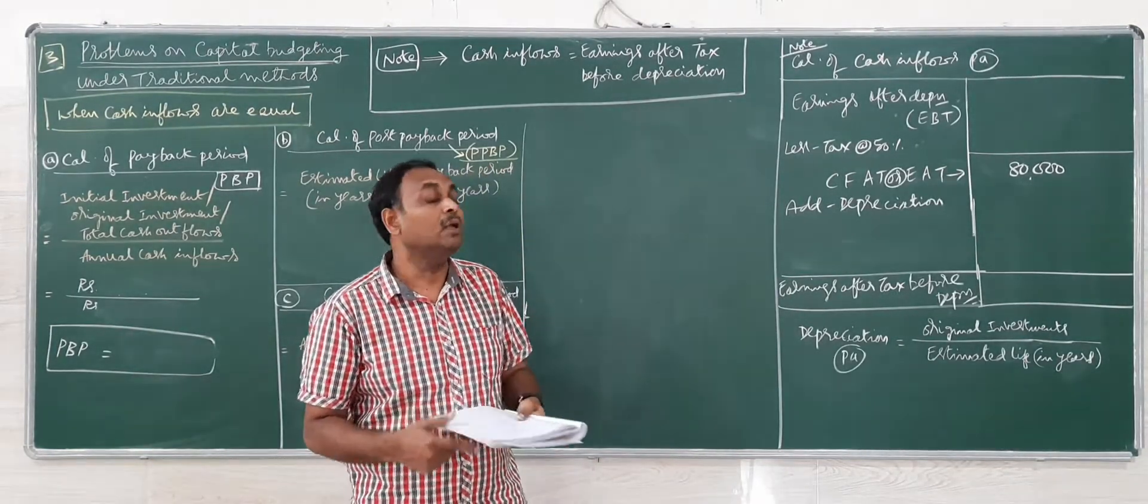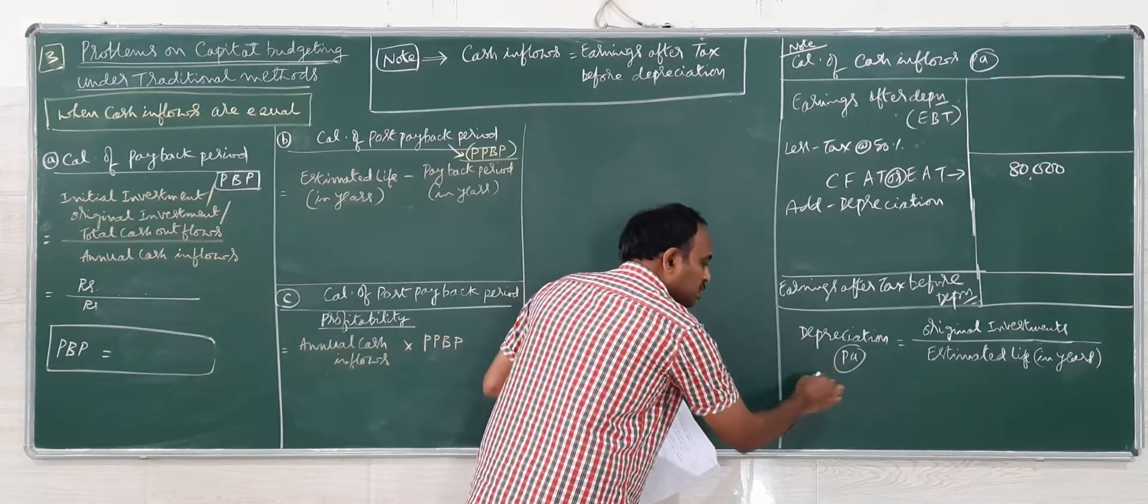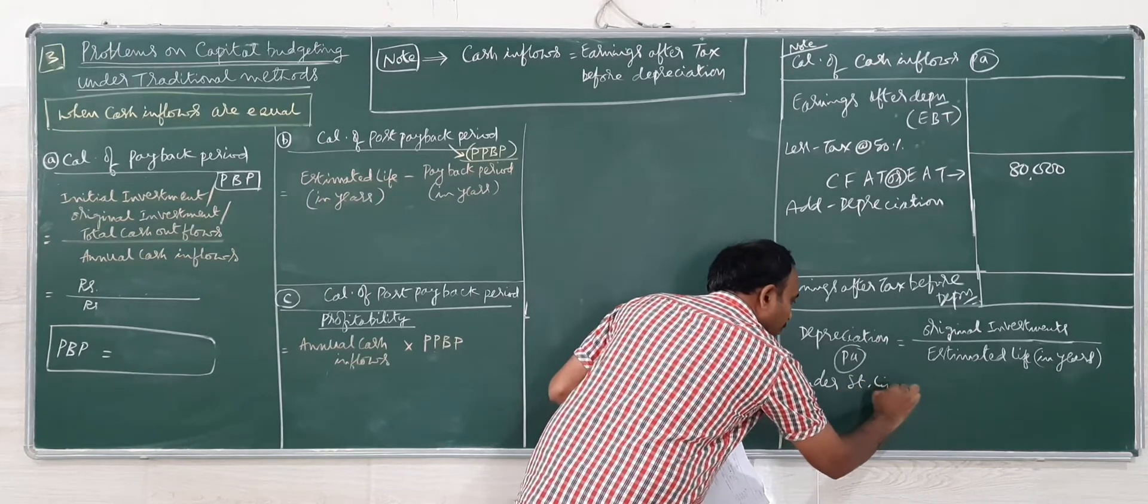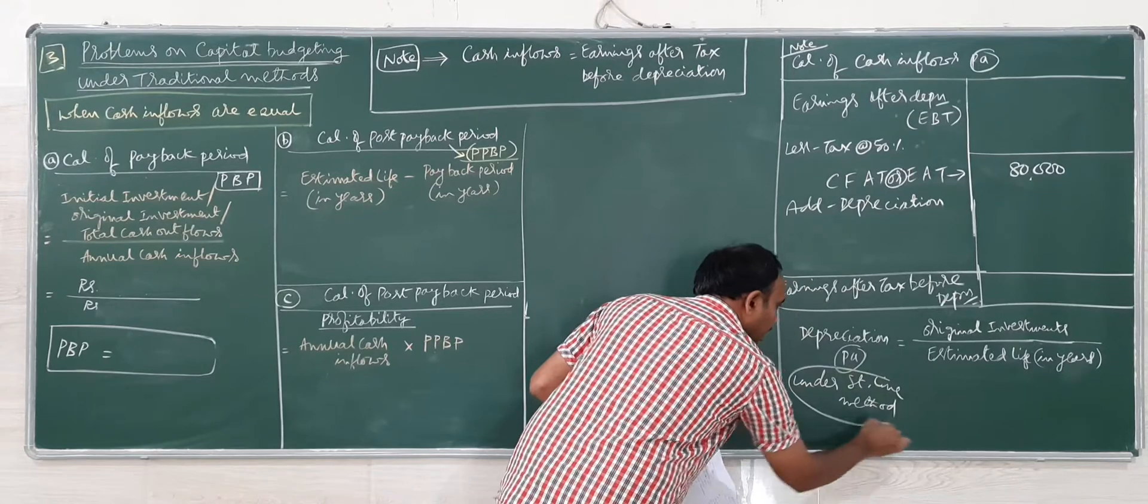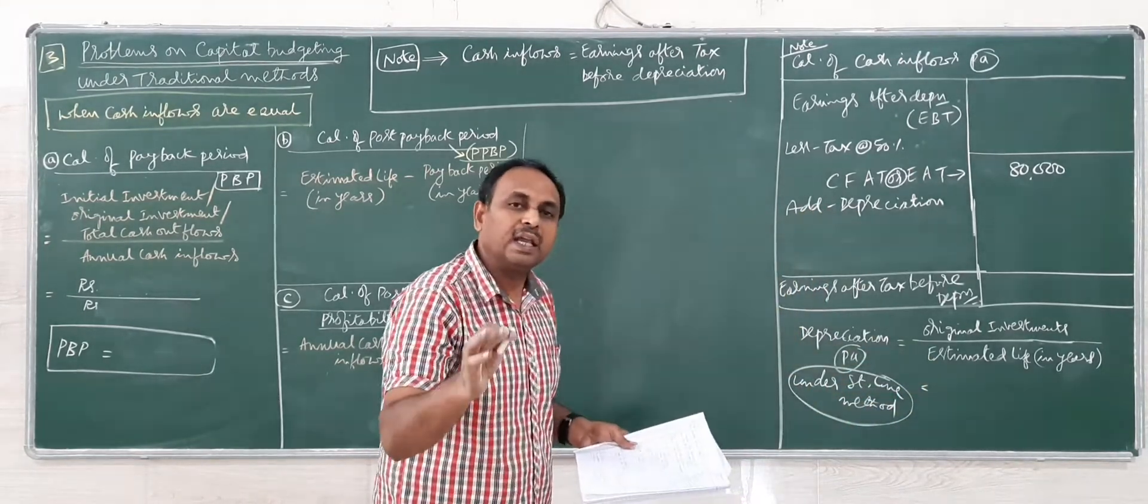Depreciation percentage is not given in the problem, so when percentage is not given we have to calculate depreciation under straight line method to find the cash inflow.